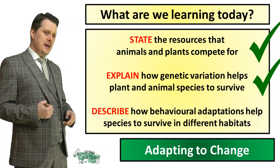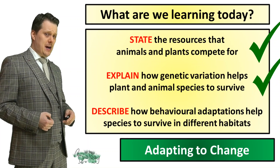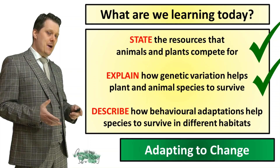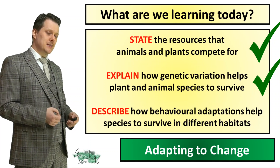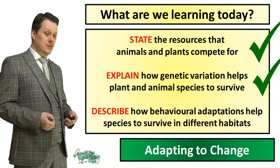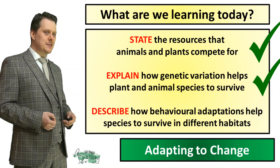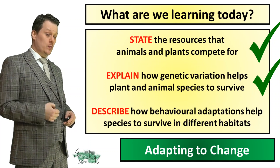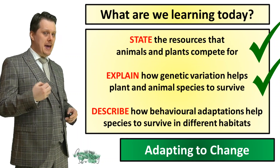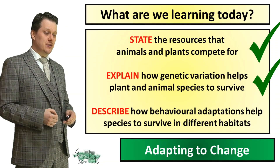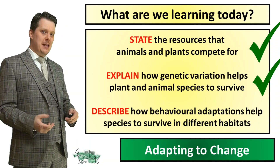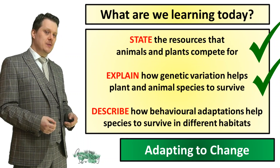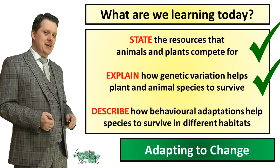So now we can explain how genetic variation in our animals and plants helps them to survive in their habitat. Next, we're going to look at some behavioural adaptations of animals and plants which enable them to survive in their habitat.